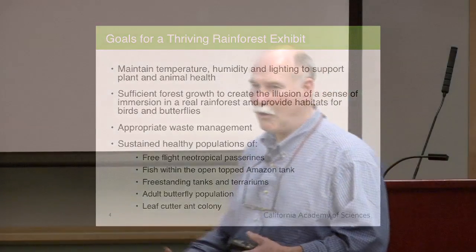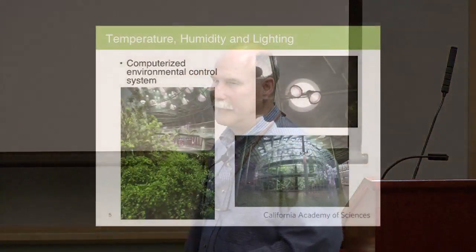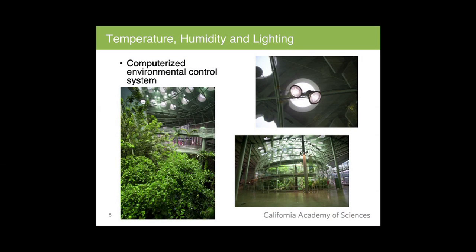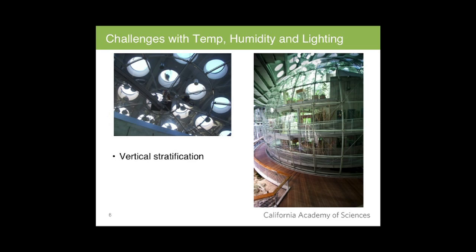To make this all work, we developed a computerized environmental control system with set points for temperature, humidity, and light to sustain plant growth and promote the immersion effect. With all goals come challenges. At the beginning, we had set points for a constant humidity of about 75–80% and a temperature ranging from about 75 to 80 degrees.